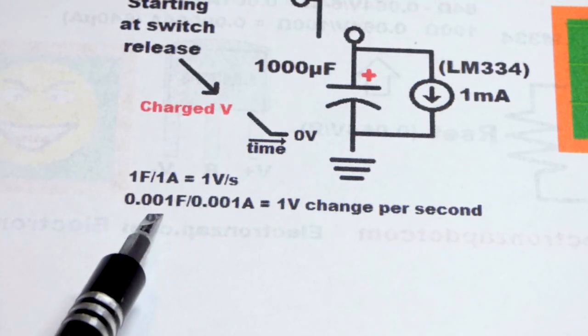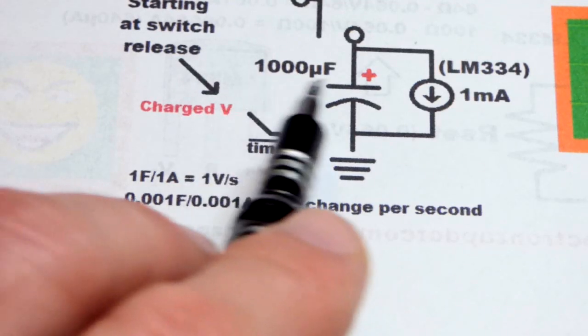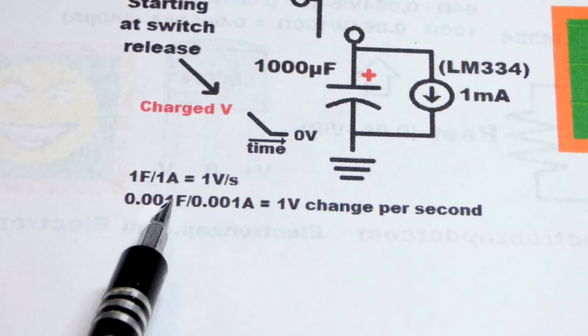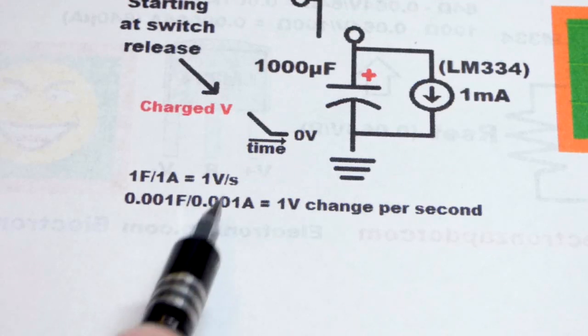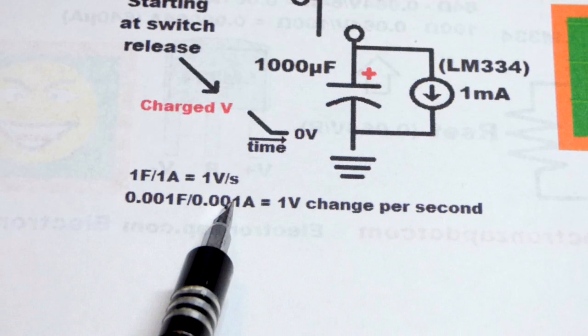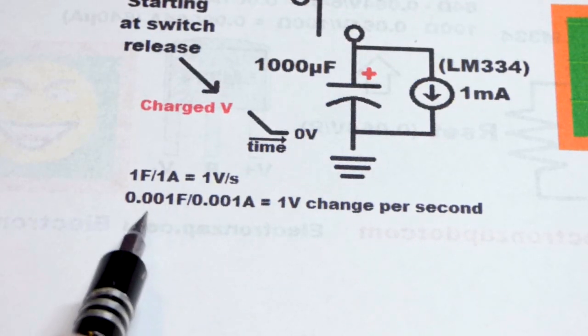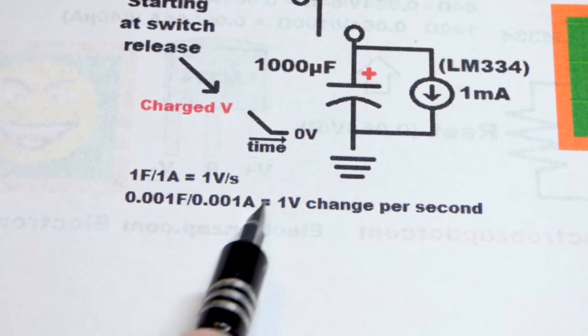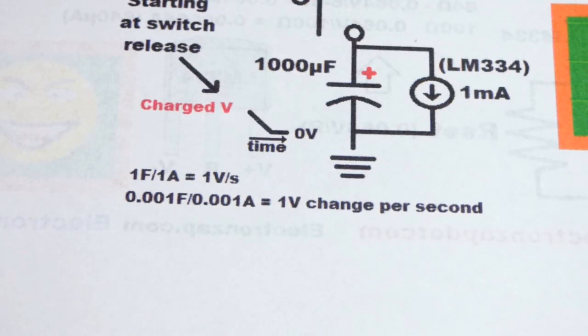If it's one thousandth, or one thousand microfarad like we have here, which is the same as a millifarad, and the current is one milliamp which we have here, again it's one divided by one, other than the decimal point movement. But again, it's one volt per second, so that makes the math easier.